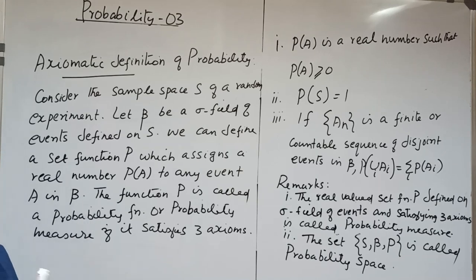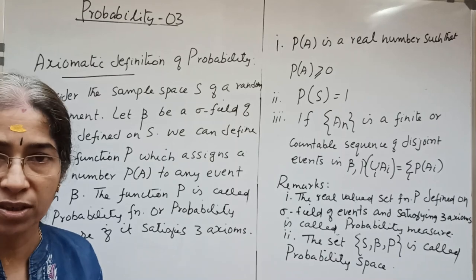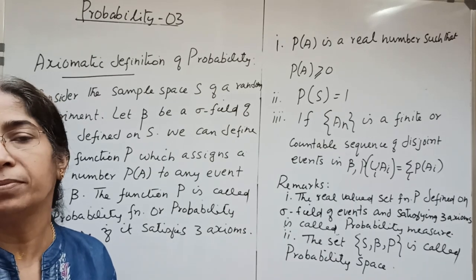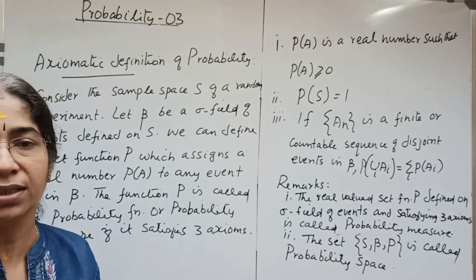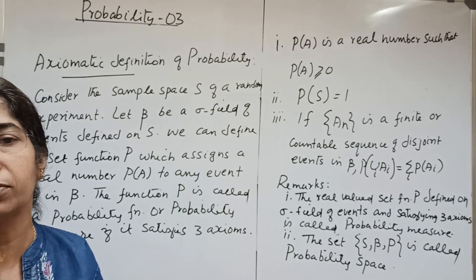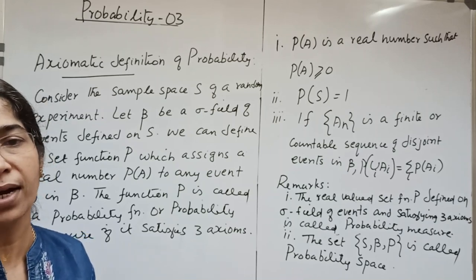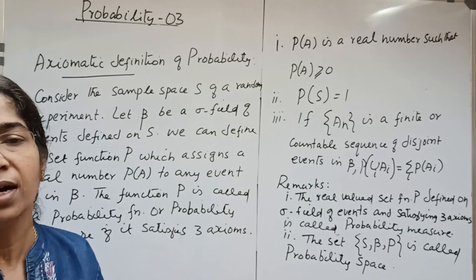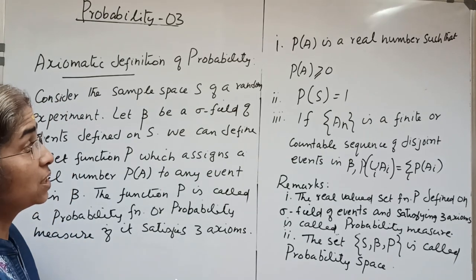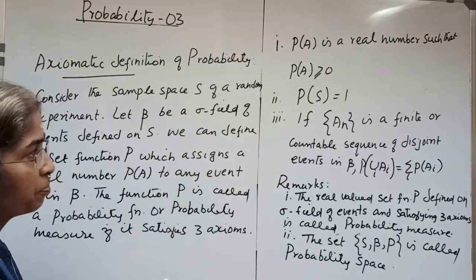That is: A belongs to beta implies A-complement belongs to beta; S belongs to beta and phi belongs to beta; and if A_n is a finite or countable sequence of events in beta, then the union over i of A_i and intersection over i of A_i both belong to beta. Such a set of events is called a sigma field of events.